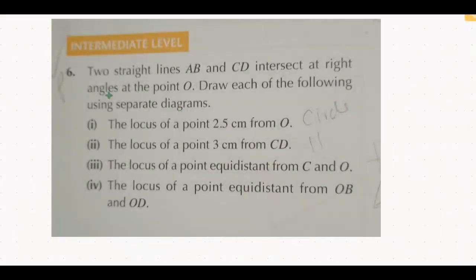This question is about the topic Loci from the book B4, O-Level Mathematics. Two straight lines AB and CD intersect at right angle at the point O. Therefore, AB and CD are perpendicular to each other and they meet at point O.